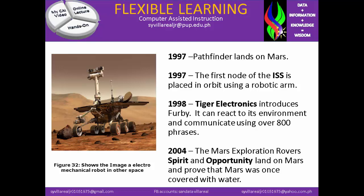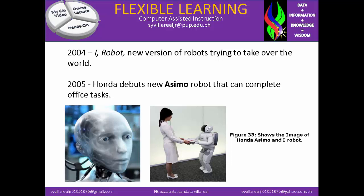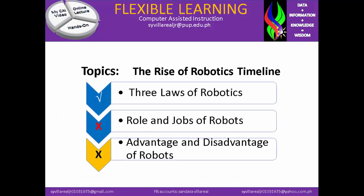In 2004, the Mars Exploration Rover Spirit and Opportunity land on Mars and proved that Mars was once covered with water. Also in 2004, iRobot released a new version of robots. In 2005, Honda debuted the new Asimo robot that can complete office tasks. Figure 33 shows the image of Honda Asimo and iRobot.